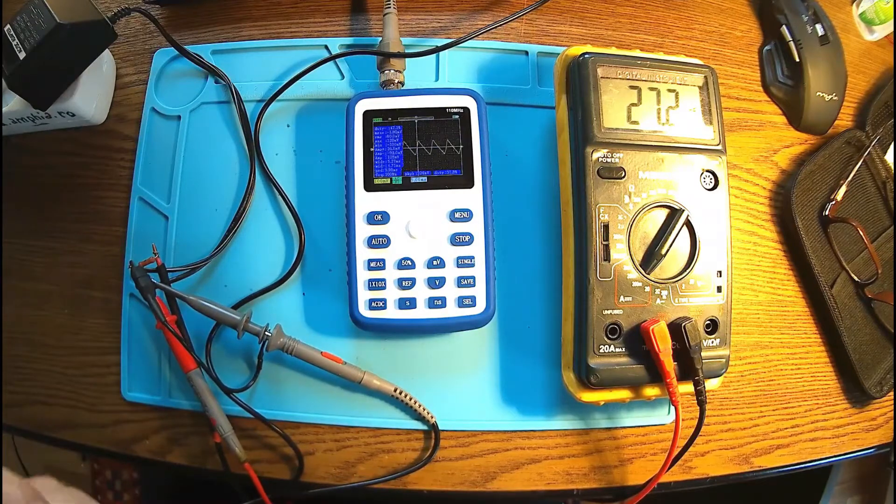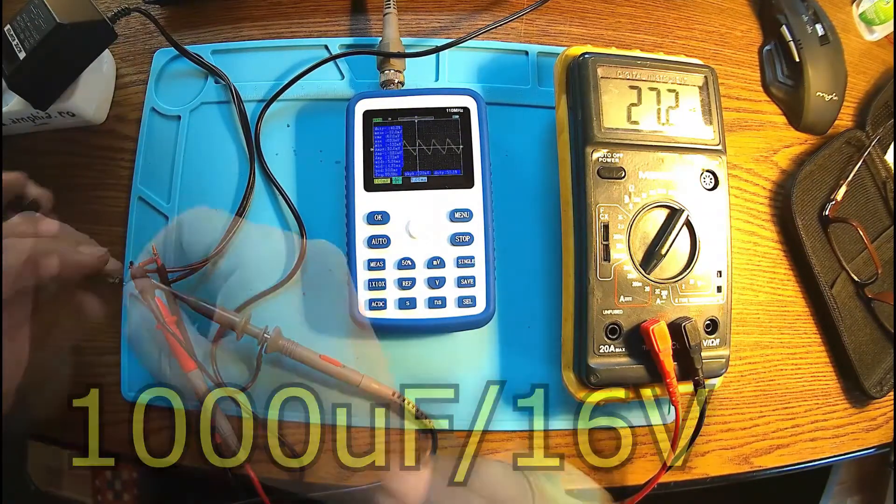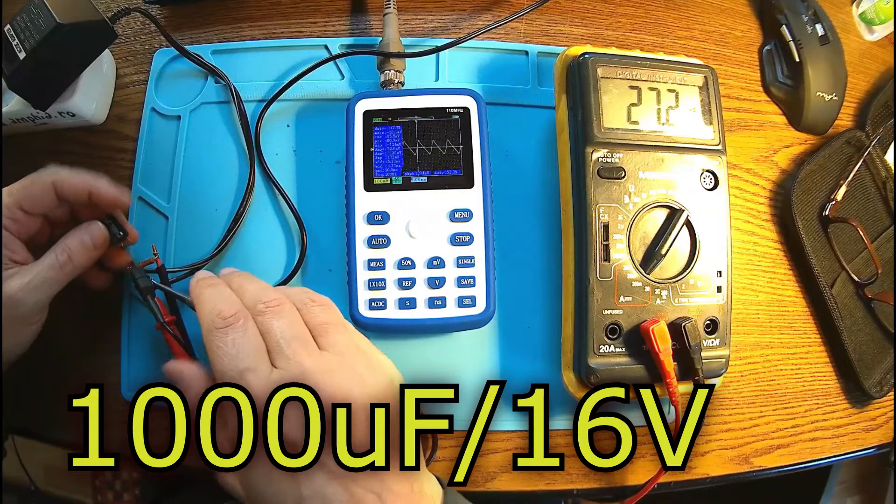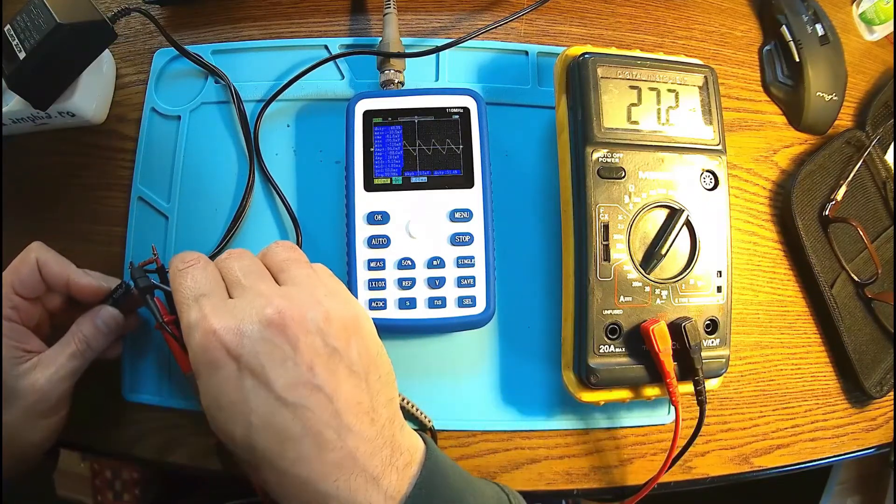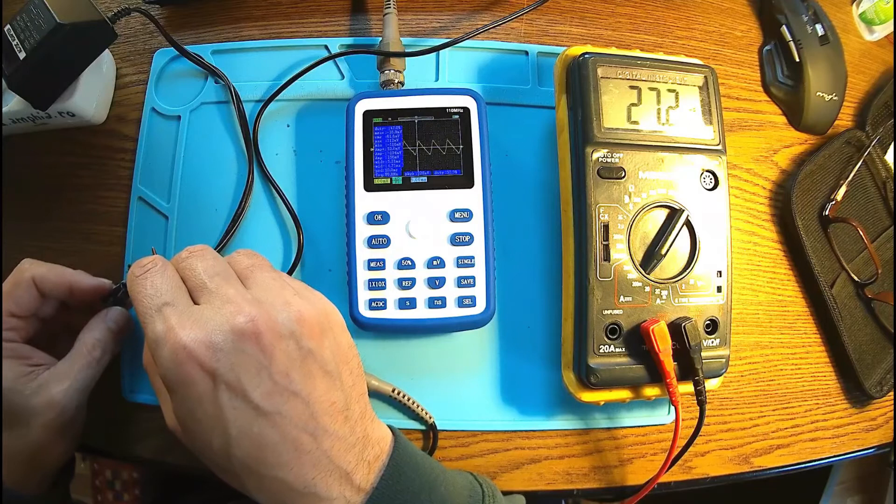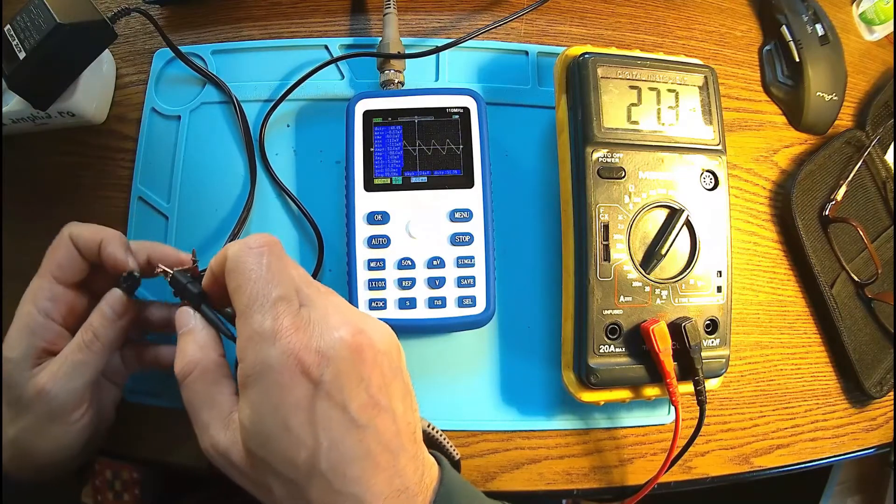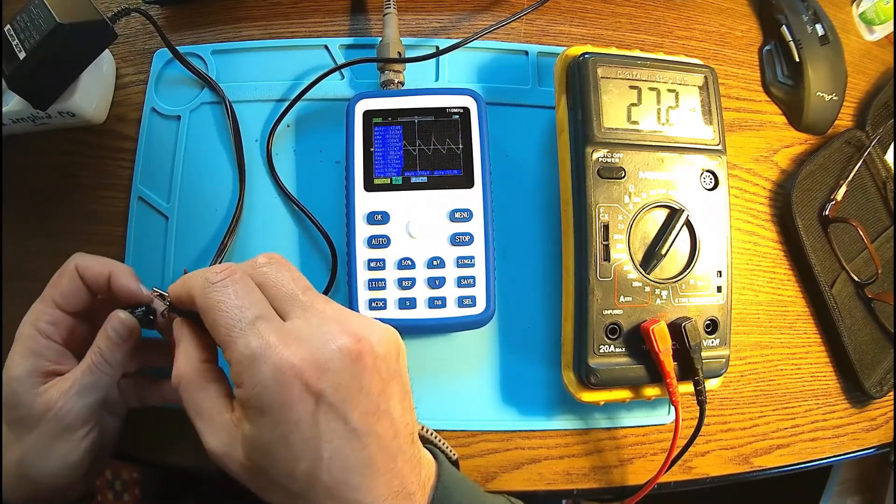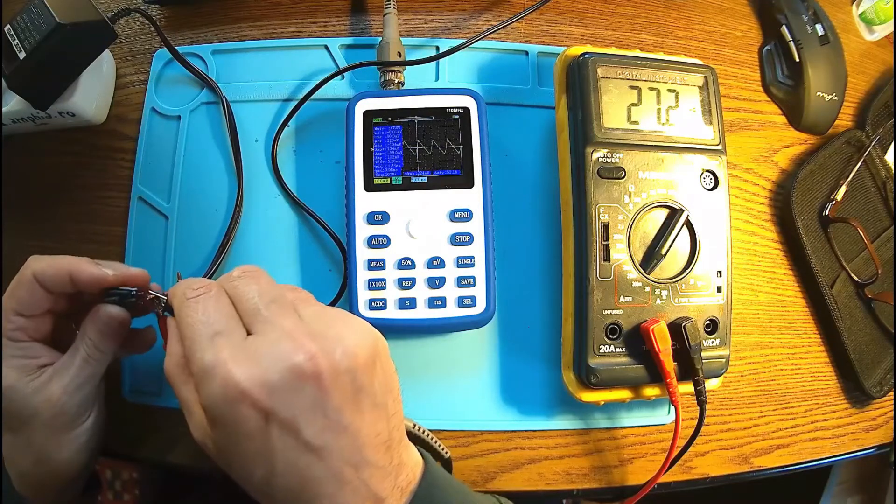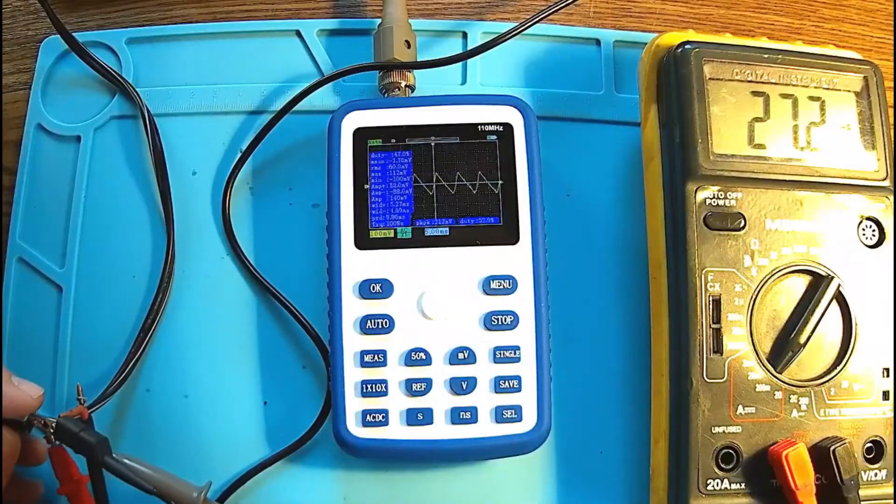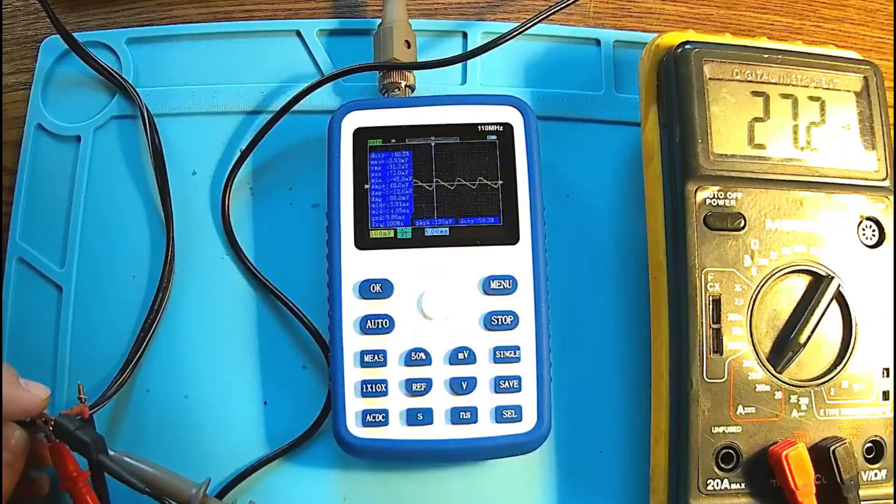Now if we consider having an extra capacitor, let's have a 1000 microfarads at 16 volts in parallel before the resistor. This is minus and this is plus. And there we go, you can see it already. The ripple went down to 120 millivolts.